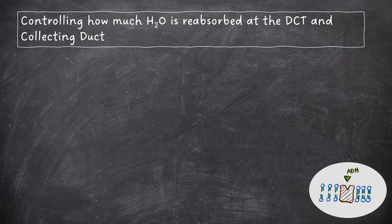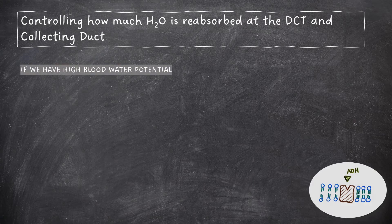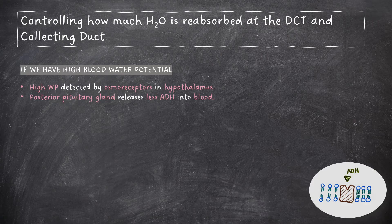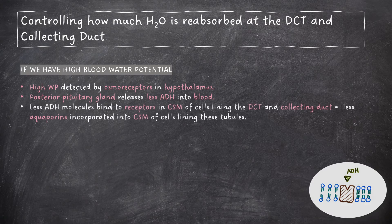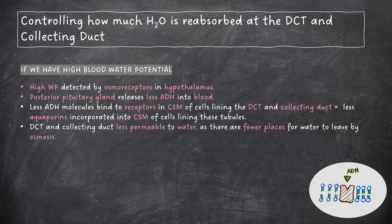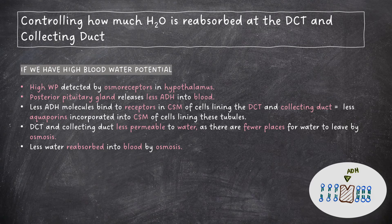The opposite happens if there is a high blood water potential. This is detected by osmoreceptors in the hypothalamus. The posterior pituitary gland releases less ADH into the blood, meaning that less ADH molecules bind to receptors in the cell surface membrane of cells lining the distal convoluted tubule and collecting duct, meaning that less aquaporin-containing vesicles are triggered to fuse with the cell surface membranes, so less aquaporins are incorporated into the cell surface membranes. These tubules become less permeable to water, as there are less places for water to leave by osmosis, so less water can be reabsorbed into the blood by osmosis. Overall, more water is lost and urine is more dilute.